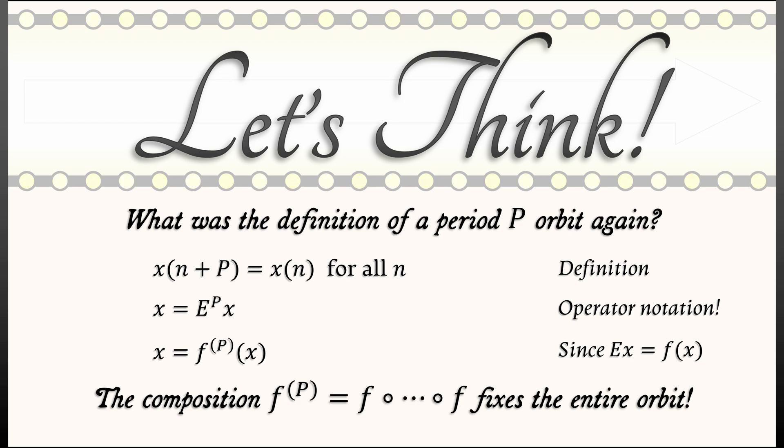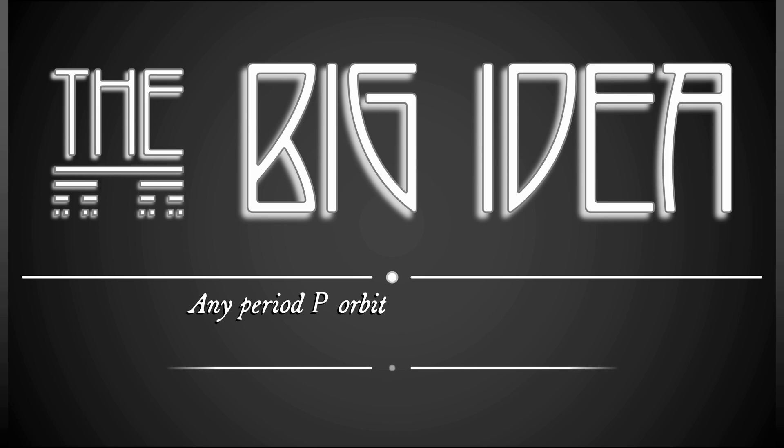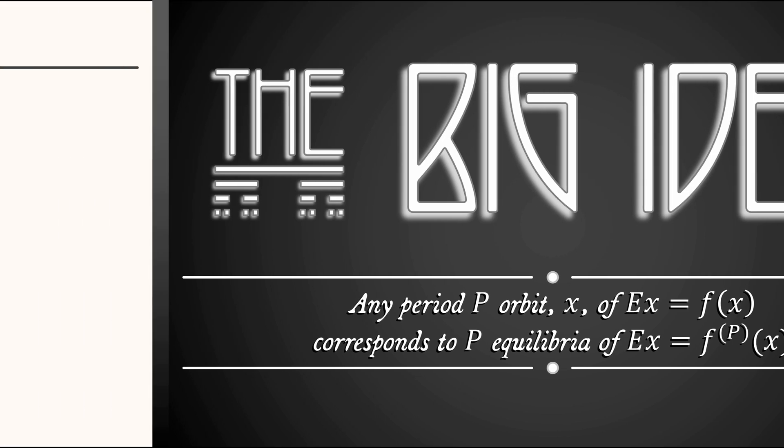Now, that composition has to fix the entire periodic orbit as equilibria. The big idea is that any period P-orbit x in the discrete time dynamical system, E x equals f of x, really corresponds to P equilibria of the system, E x equals f to the P of x. Now, that idea is going to make a lot more sense if we see it in the context of an example.